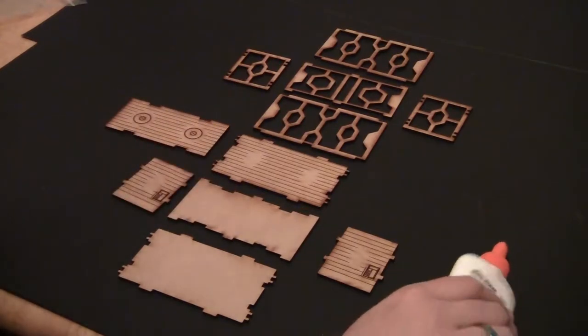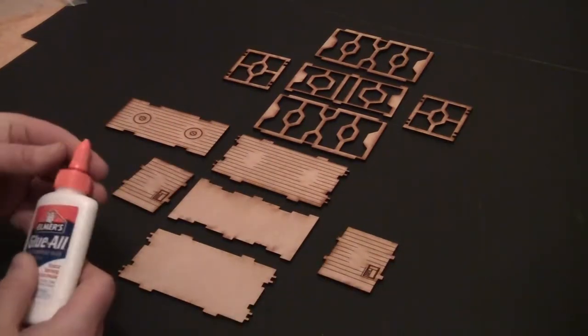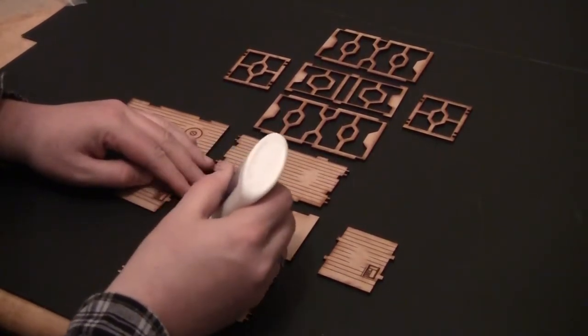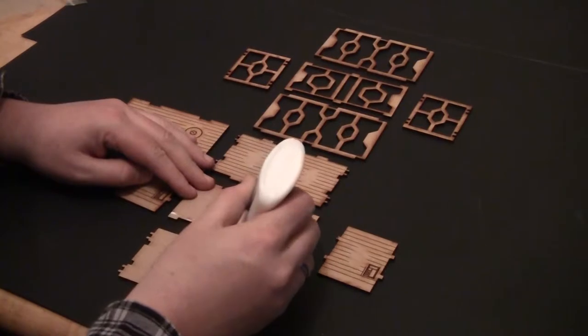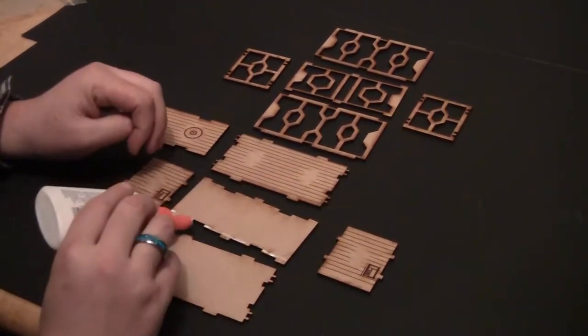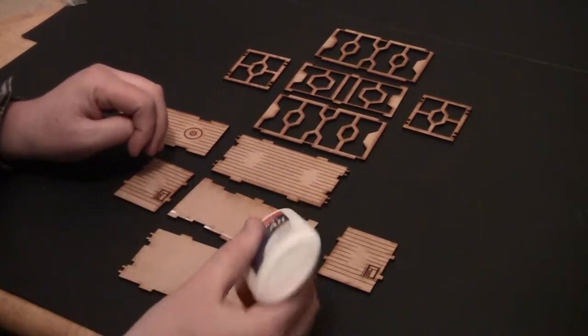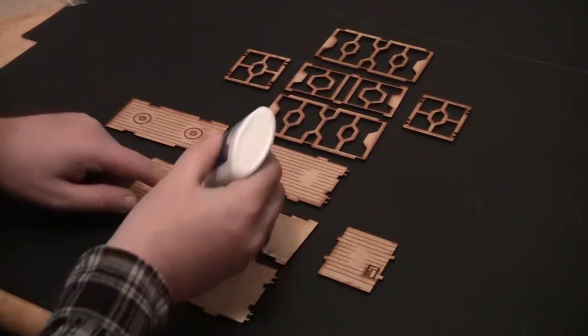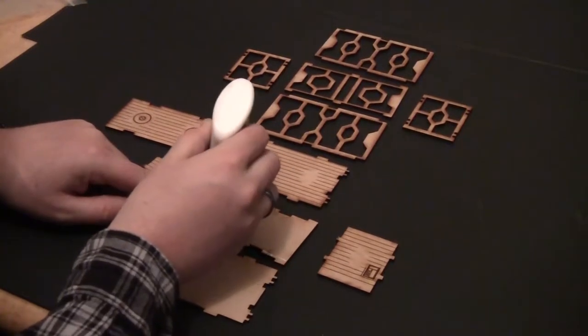Alright, so the first thing we're going to do is get these pieces ready to glue together. I'm going to put a line of glue on this inner area. This is the inner cuts to show where the slots for the inner box will go. I'm going to do that on both sides.